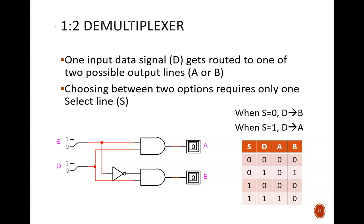Here, one data input signal, named D, is routed to one of two possible output lines, A and B.